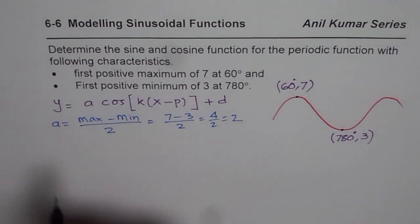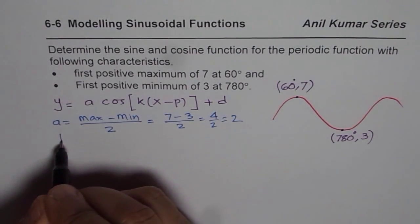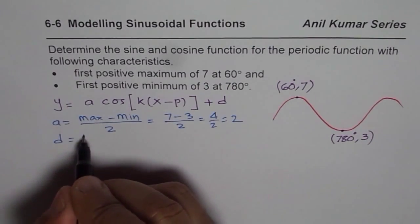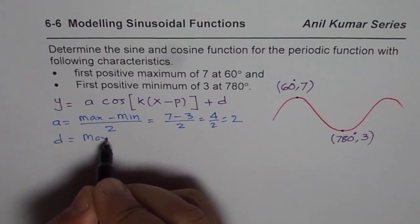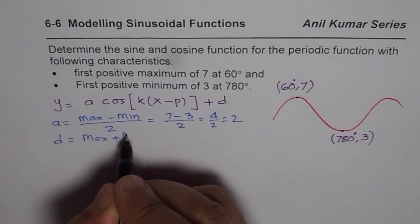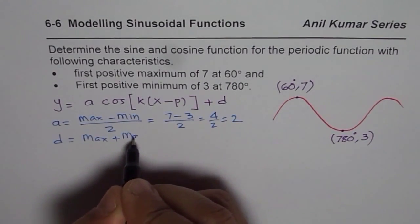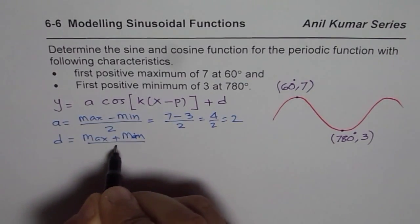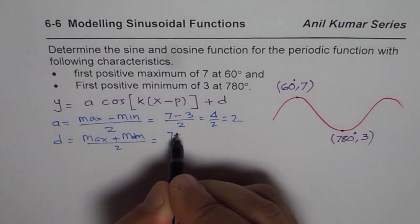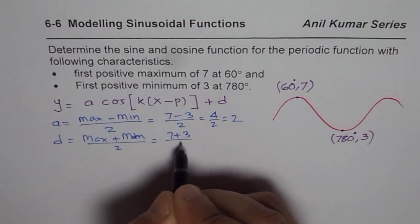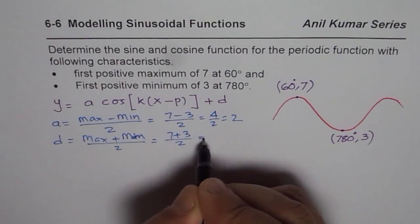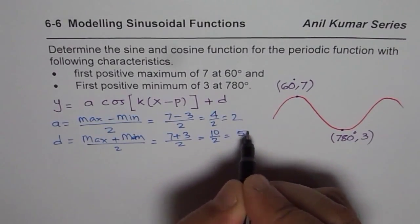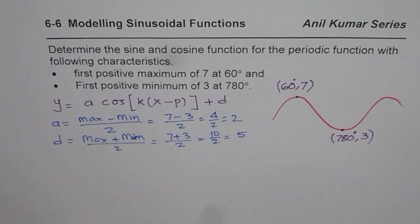Now what is d? These are easy things to work with and you should work with them first. d is the average value — the average of maximum and minimum. So you add them and divide by 2, and you get the average value d = 5.